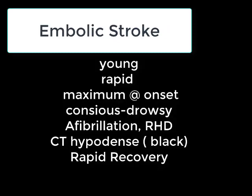The next stroke was embolic stroke, which occurs in young age. It is rapid in onset and the neuro deficit is maximum at the start. The patient may be conscious to drowsy. The commonest causes are atrial fibrillation and rheumatic heart disease. On CT it appears hypodense, and the recovery is usually rapid.